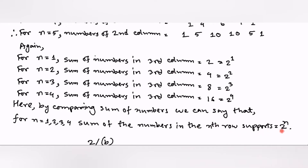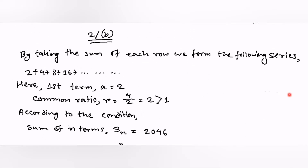The second part of question B: they asked us to show that the nth row sum equals 2^n. For n=1 the sum of terms is 2, from the second row it is 4, the third row it is 8, and the fourth row it is 16. We can write 2 as 2^1, 4 as 2^2, 8 as 2^3, and 16 as 2^4. So for the nth row, it will be 2^n, and hence it is proved.